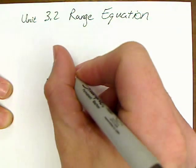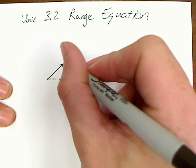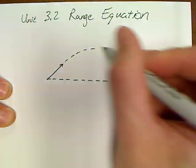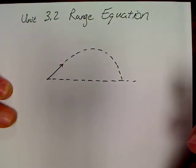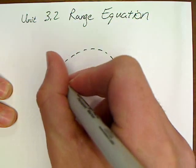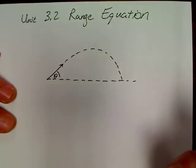The range equation is only used when you have a problem that looks like this, a problem that makes a perfect parabola, just like this one is. This is the only example of when we can use the range equation.